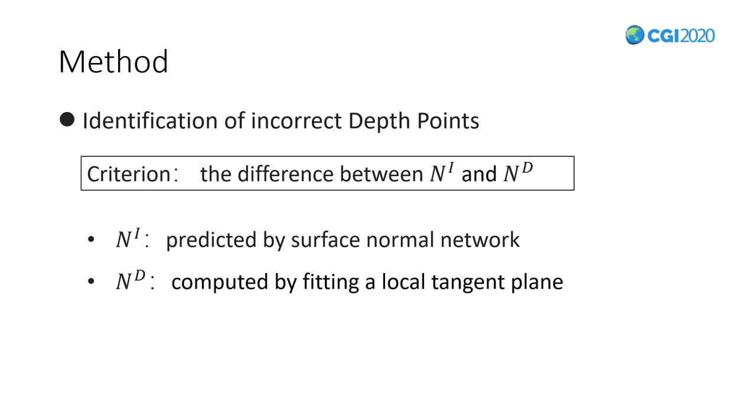Then we propose a basic method for judging whether there are error points in the area. We mainly compare the difference between the predicted normal map Ni and calculated normal ND. The Ni can be predicted from the surface-estimated network, and the ND can be calculated by fitting a local tangent plane. We find that when the depth error occurs, the Ni are more accurate than the ND.